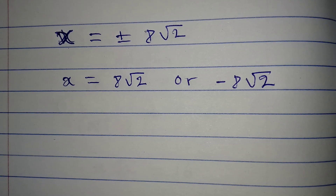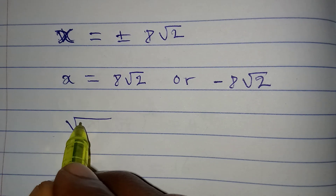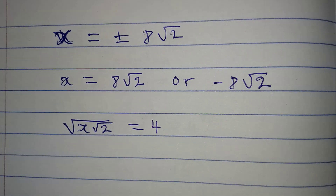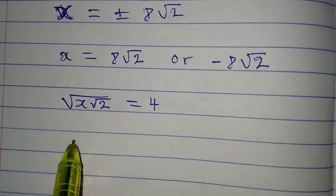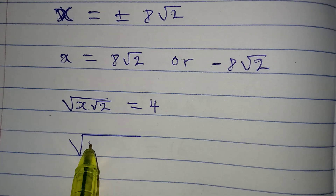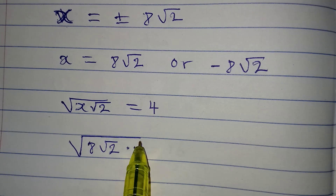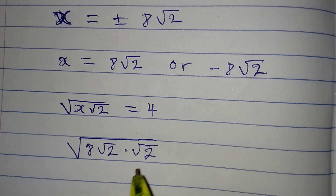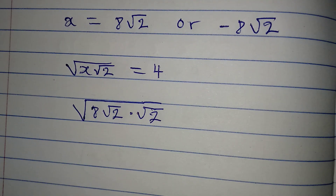Remember, one of them may not satisfy. The original equation is the square root of x times square root of 2, equals 4. We have two values for x. The first is 8 root 2 — let's put it in. That means we're going to get the square root of 8 root 2 multiplied by root 2 inside the square root sign.